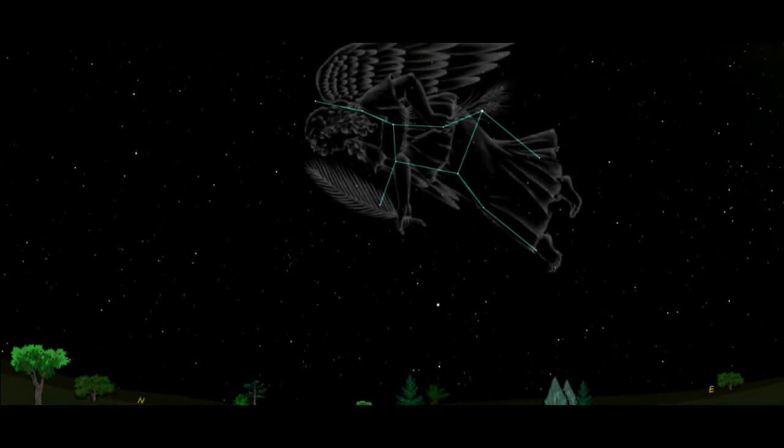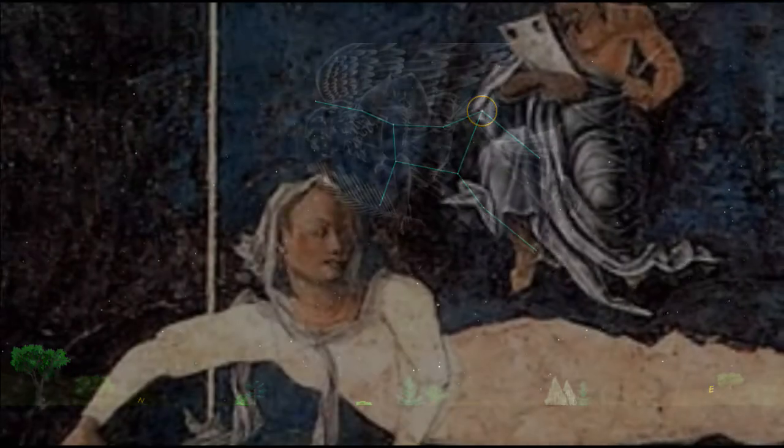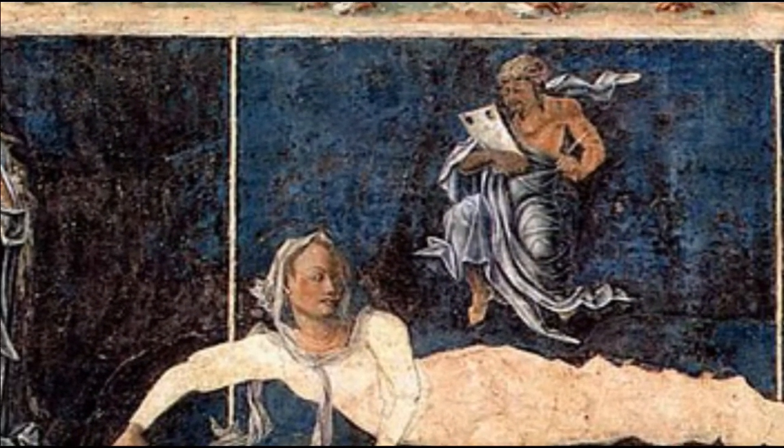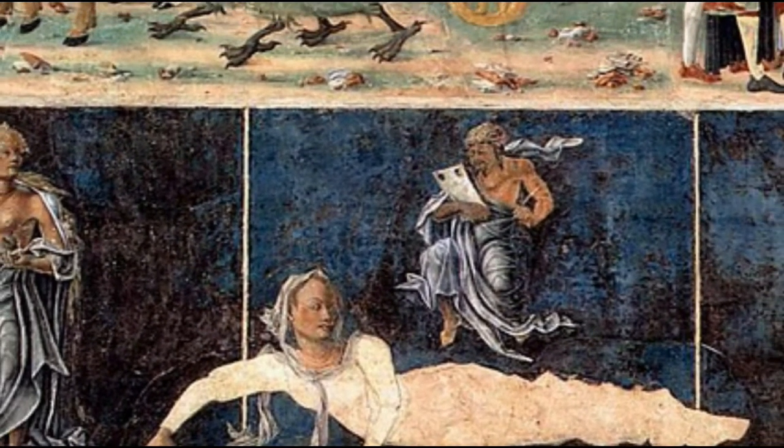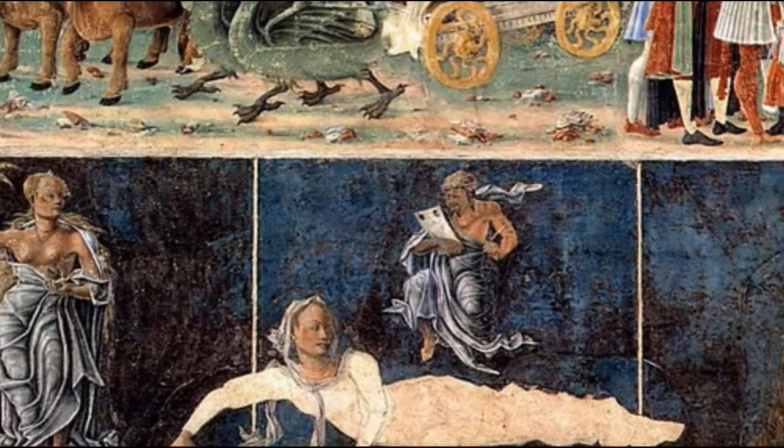Identificaremos ahora la constelación de Virgo a partir de su estrella más brillante, Spica. En la mitología griega, Virgo era la diosa virgen que administró la justicia entre los hombres.